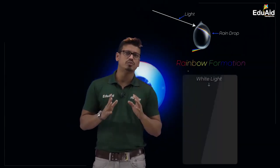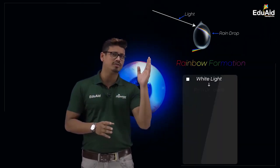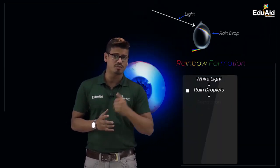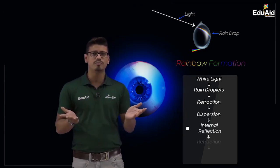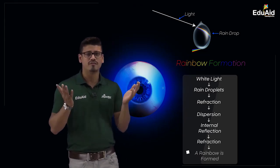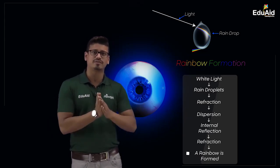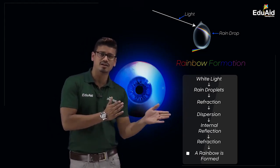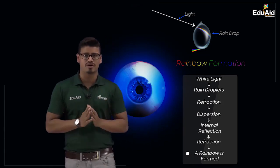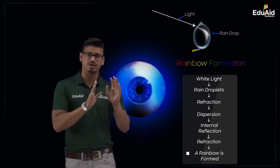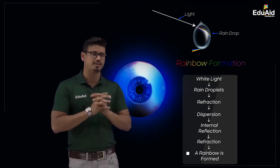After that we have studied about rainbow formation. A rainbow is formed because of the refraction of light, followed by internal reflection of light, and then refraction of light again.